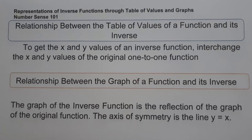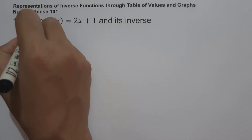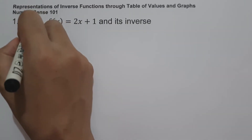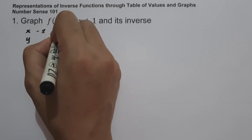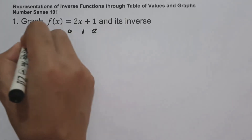So let's start with an example. On example number one, graph f of x equals 2x plus 1 and its inverse. To graph the given function, let us construct first a table of values. Let's have x and y, and let's say the values of x are negative 2, negative 1, 0, 1, and 2.